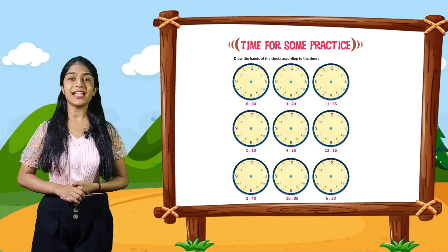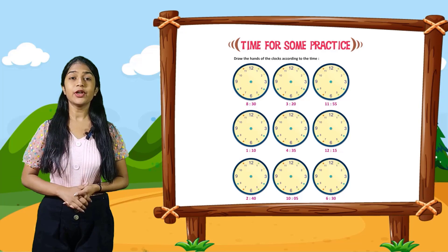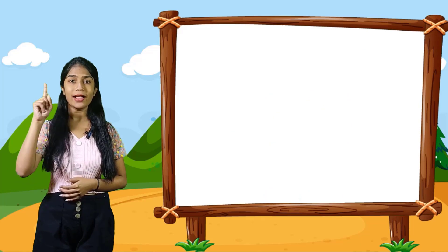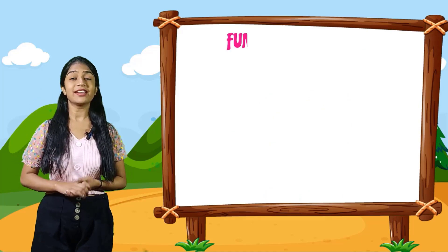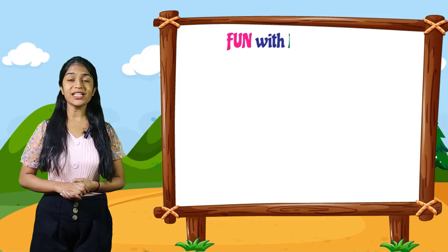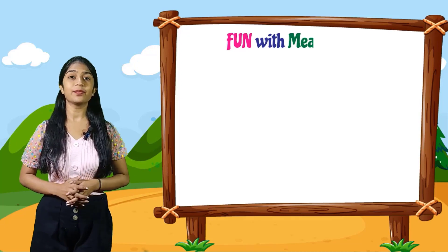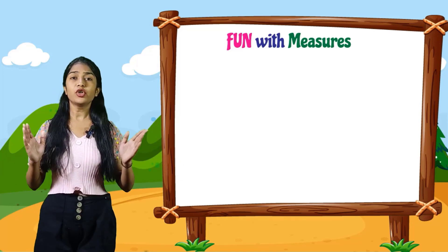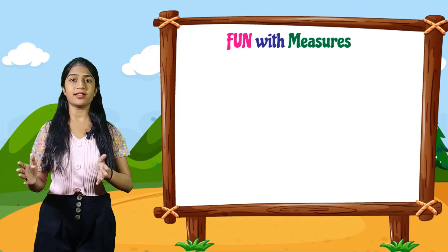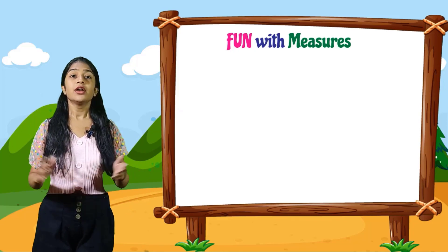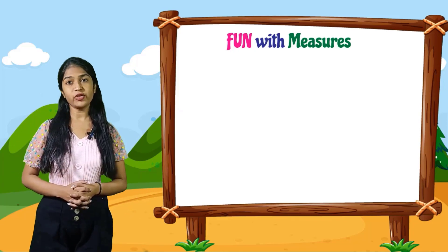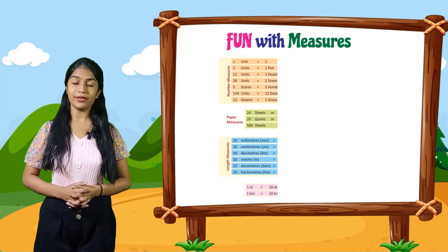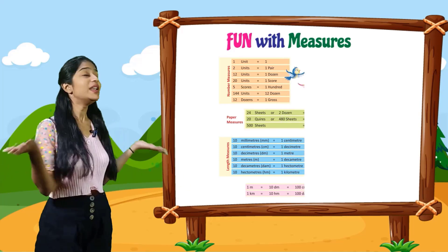Fun with measures. 1 unit is equal to 1. 2 units is equal to one pair. 12 units is equal to one dozen. 20 units is equal to one score. 5 scores is equal to 100. 144 units is equal to 12 dozen. 12 dozen is equal to one gross. Paper measures: 24 sheets or two dozen is equal to one quire. 20 quires or 480 sheets is equal to one ream. 500 sheets is equal to one commercial ream.